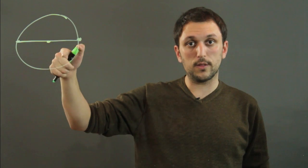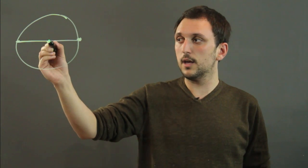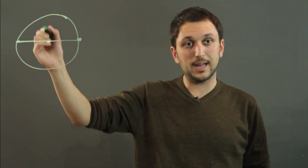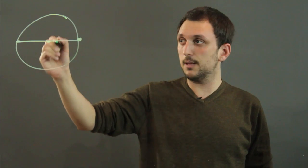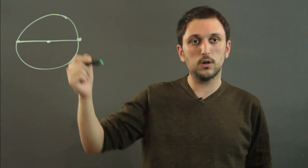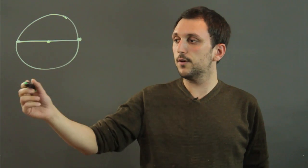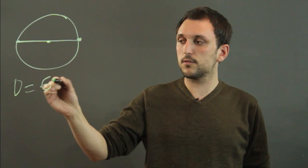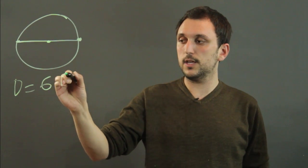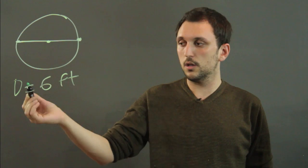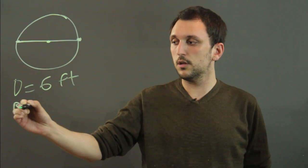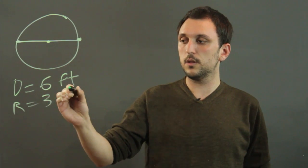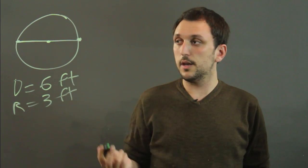Think of the word radius as a point radiating out to any point on the circle. So if the diameter is say 6 feet, then the radius is 3 feet, and that's it.